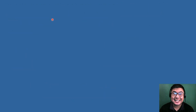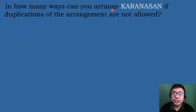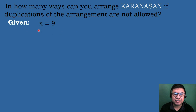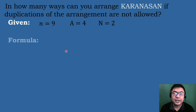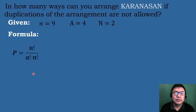Let's have our last example: In how many ways can you arrange 'karanasan' if duplications of the arrangement are not allowed? Let's identify the given. The value of N equals 9 — there are 9 letters: 1, 2, 3, 4, 5, 6, 7, 8, 9. Letter A equals 4, as there are 4 A's. Letter N equals 2, as there are 2 N's. The formula is: P equals N factorial over A factorial times N factorial.